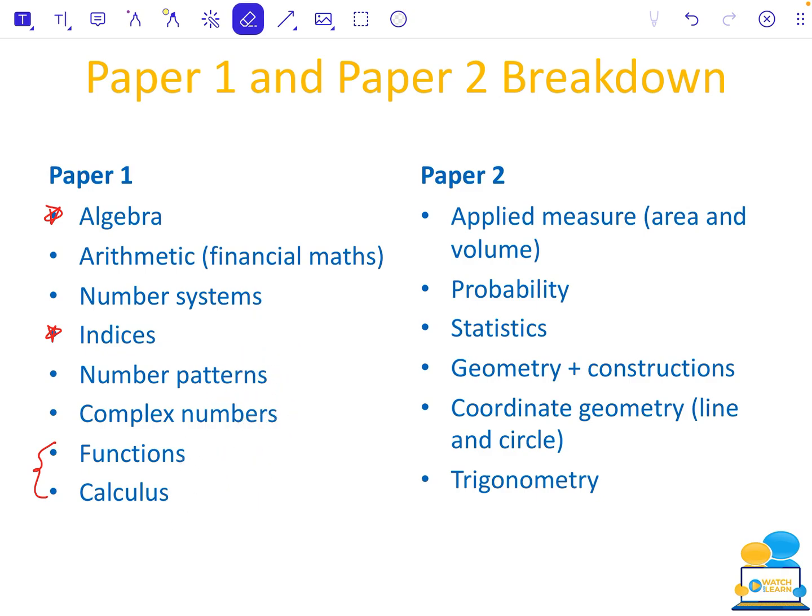These go in pairs. I'd put algebra and indices, I'd be learning those together. Complex numbers is a standalone topic. Number patterns is fairly standalone, it links up with algebra, then functions and calculus are extremely linked. That's your paper one. The long questions in Section B are often functions and calculus, patterns, and your financial maths as well. For paper two, you have your area and volume questions. They can be short or long questions depending. Probability and statistics, geometry, and I put in your constructions there, technically geometry as well. Then you have the coordinate geometry, which is the line and the circle, and trigonometry.